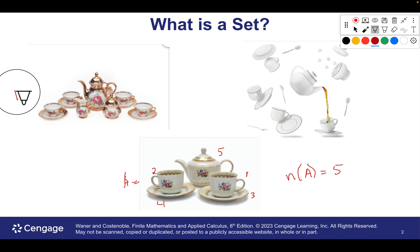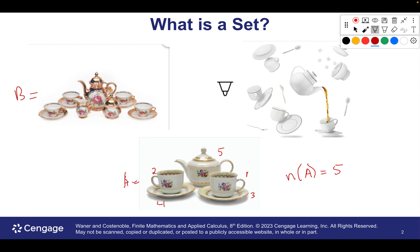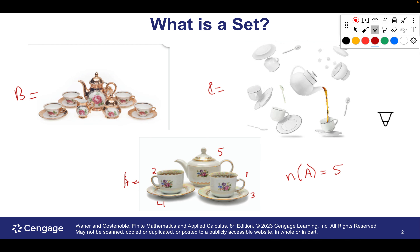We might say this is set B and this is set C, and we could count the pieces — the members of these sets, the elements. So that's kind of just a quick overview of where we're going. That's all we're doing today, really.